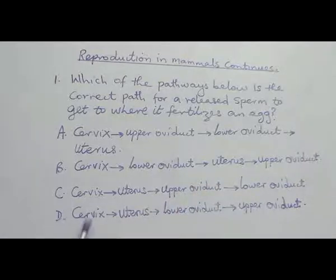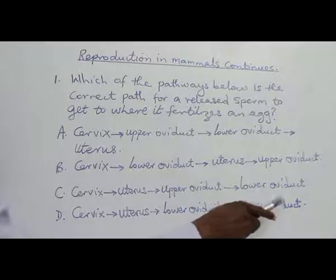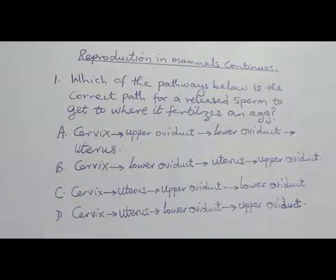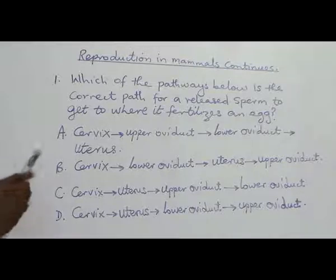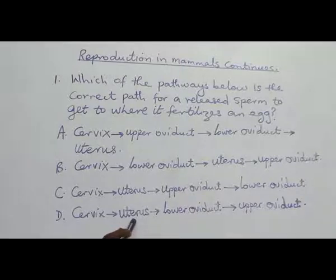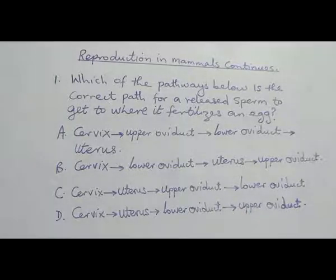Option D: Cervix to uterus, uterus to lower oviduct, and lower oviduct to upper oviduct. This question becomes simple if you know the diagram of the female reproductive structure. You discover that the sperm will have to pass through the cervix, through the uterus, through the lower oviduct before getting to the upper oviduct. So D is the answer.